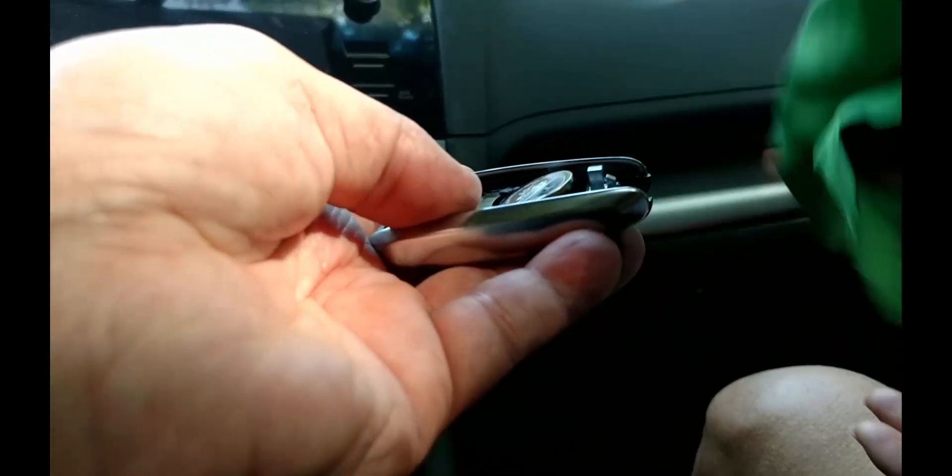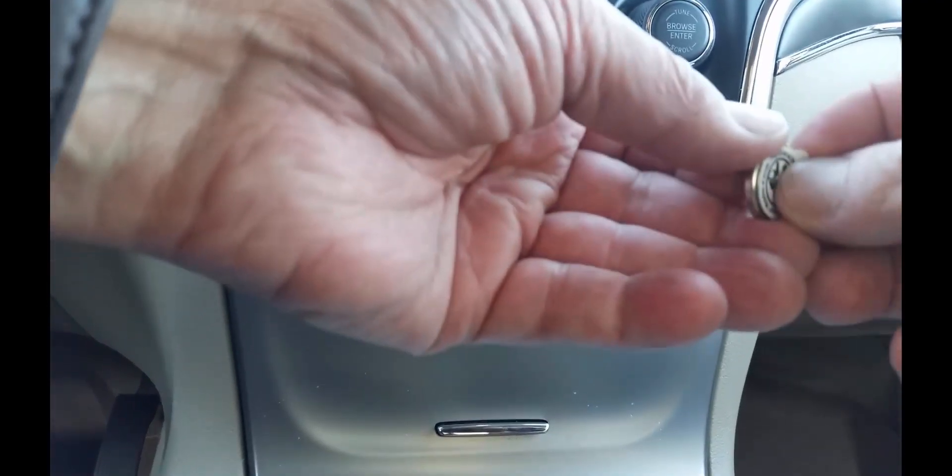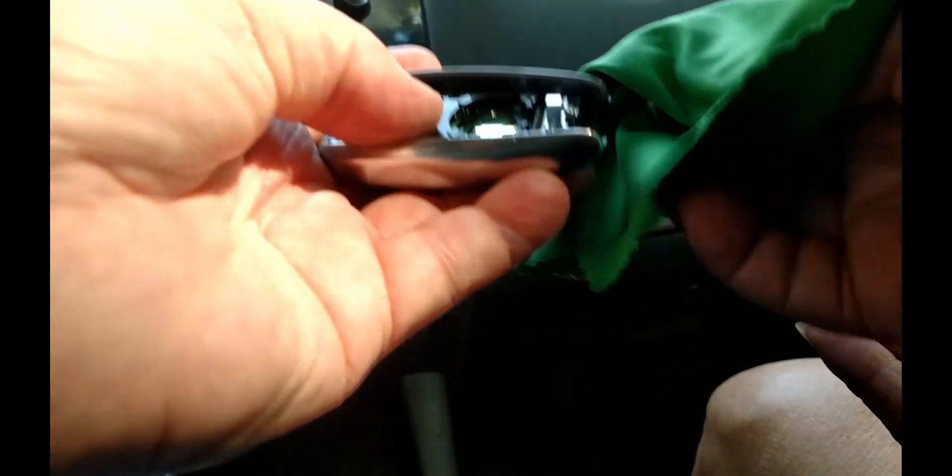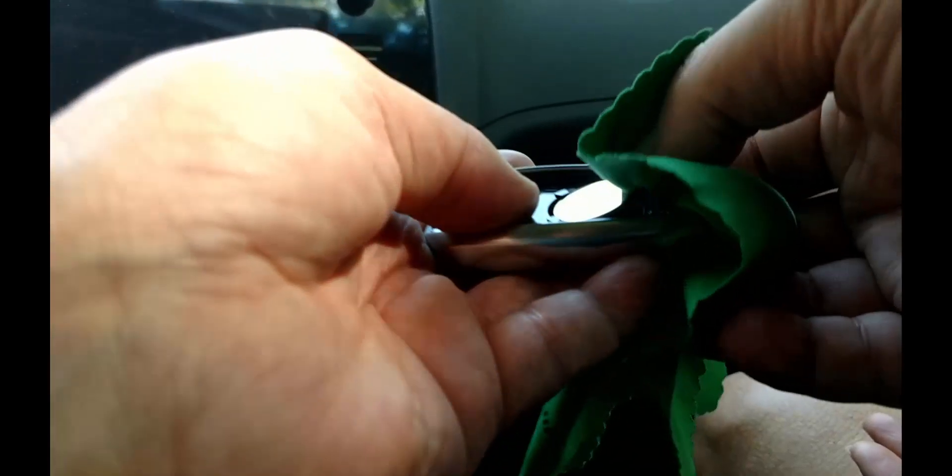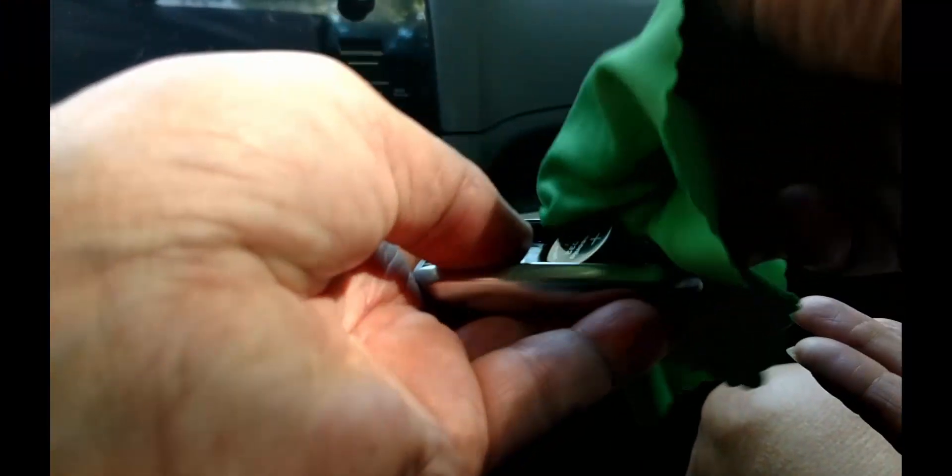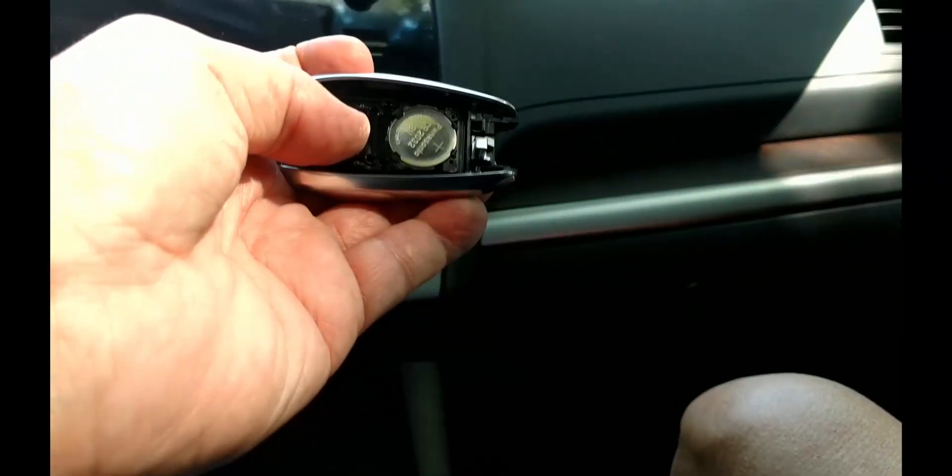Slip the new battery in with its markings up, starting at the back of its space. Don't forget to peel the backing off the new battery if there is one. We are using a lens cleaning cloth to keep skin oils off the battery, but be careful. It can be quite slippery in the cloth. If you make a final move with a finger, wipe it down once again.